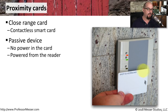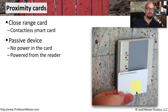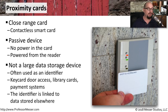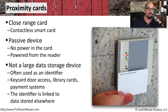This card is a passive device — there's no power source inside the card. It is able to be powered inductively from the reader that is next to the card. This card also does not usually store a lot of data; usually it's a single identifier, and that identifier is then compared to a much larger database to determine whether you can gain access to that door or not.